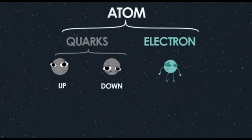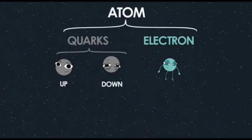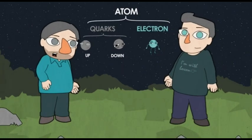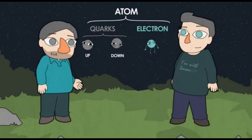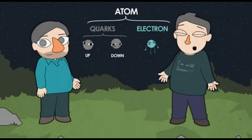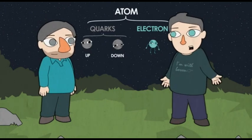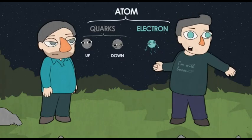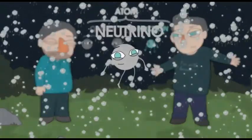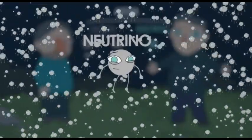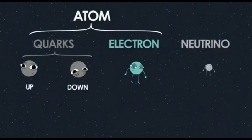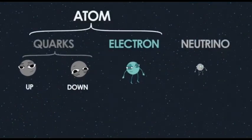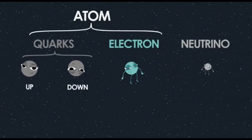So that's three fundamental particles: two quarks and the electron. Is that what everything's made of? Almost everything in the universe is made of those things, but there are other fundamental particles — there are trillions of neutrinos passing through us right now. So we've got the up and down quark, electrons, and neutrinos. But that's still not even close to the full picture.